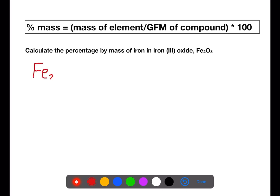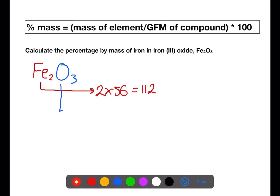Let's first calculate the gram formula mass for iron oxide. There are two iron atoms which each have a mass of 56, giving a total of 112. There are three oxygen atoms each with a mass of 16, giving a total of 48. The total gram formula mass is 160.